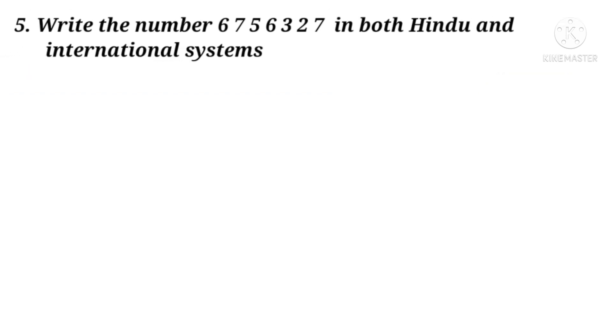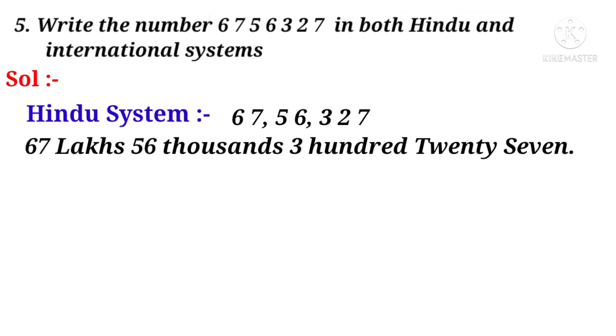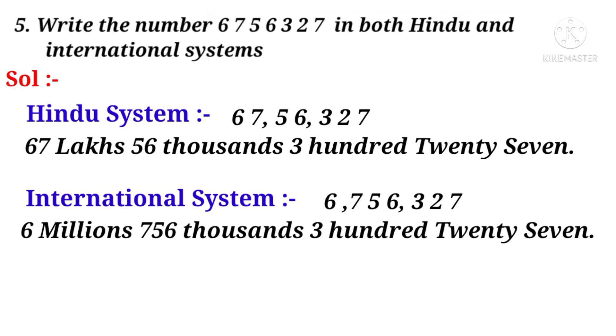Now number 5. Write the number in both Hindu and international systems. Solution: In Hindu system, write the number, put commas: 67 after 1 comma, 56 after 1 comma, and then 327. So 67,56,327. In international system, put comma after 6 and then 756,327.